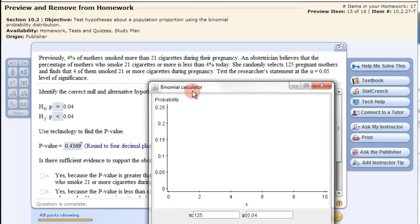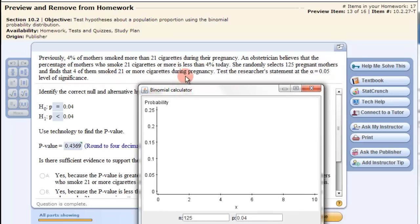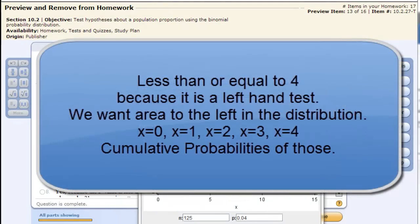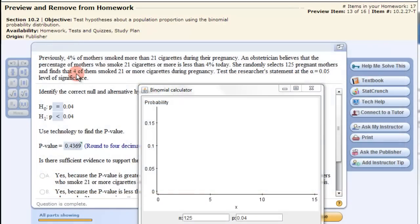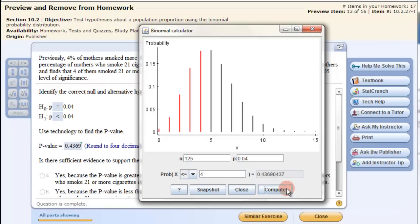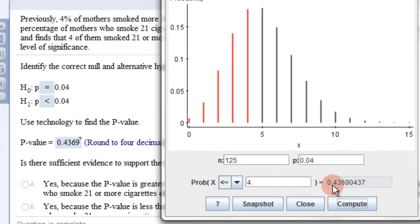And then, it says that we find that 4 of them smoke 21 cigarettes during the day. So, basically, we want to know if it's less than 4, right? Less than or equal to 4. The reason why we want less than or equal to 4 is because we want the probability of 0, 1, 2, 3, 4. We want all of that, that area to the left of that in a binomial distribution. So, we go down here and we change this to a less than or equal to. And we change our numbers to 4 and we click Compute. And this gives us our p-value that we are to use, 0.4369.